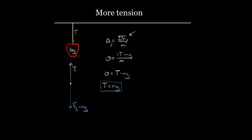Why would it not equal mg? Imagine someone pulls down on the apple with an extra five Newtons — pulling the apple, which pulls the string, making it tighter. In that case, I've got one more force on my force diagram: five Newtons pointing downward. When I write the net force equation, I subtract five Newtons because it points downward. I do the same algebra, multiplying both sides by m, getting another minus five Newtons, then solve for T by adding mg and five Newtons to both sides.